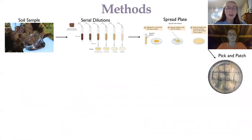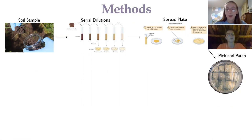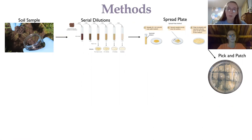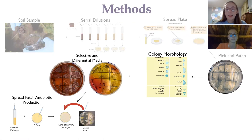To do this, we collected one gram of peat soil behind Frick underneath some bushes and created serial dilutions from that. From these serial dilutions we created spread plates to obtain single colonies to create master plates, and each lab group got their own master plate. Abby and I ended up getting master plate one. These master plates were then used to complete a few different types of tests.